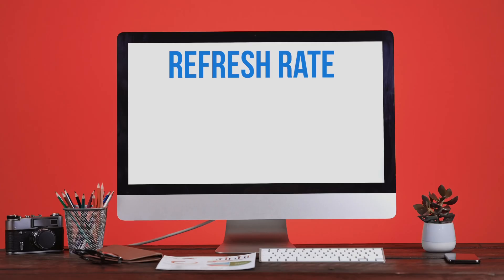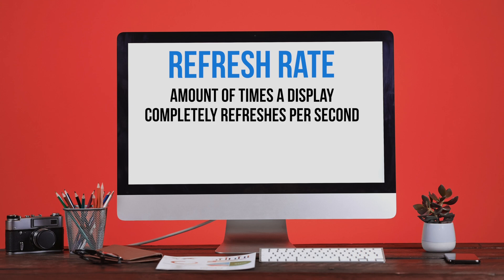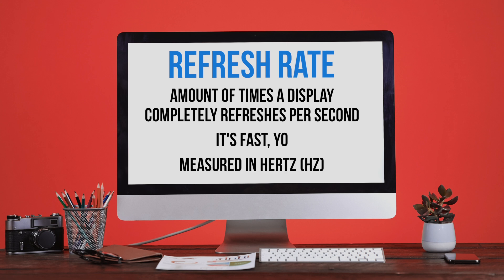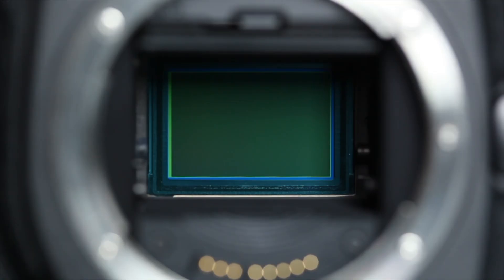With very few exceptions, most screens we are accustomed to have refresh rates — the amount of times the display completely refreshes itself every second. This usually happens so quickly we can't even see it, and the rate is measured in Hz, which is a unit of frequency. Think of it kind of like a camera's shutter speed which, among other things, controls the amount of motion blur in your picture.